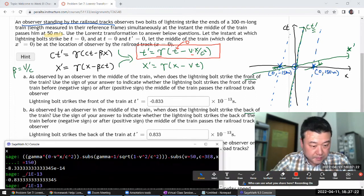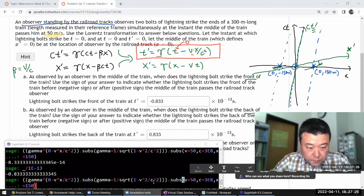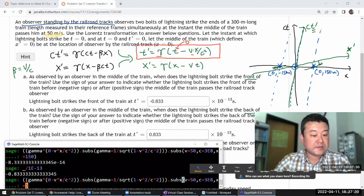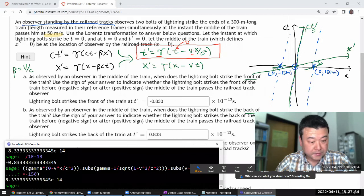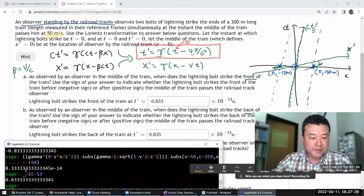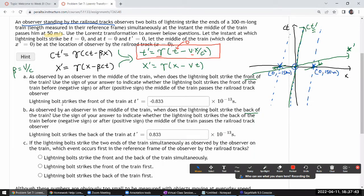When I plug in the numbers here, it's basically the same except for change of one number. Instead of x equals 150, x is now equal to minus 150. I think everything else for me is the same. And you know if I divide this by 10 to the minus 13. So yeah lightning strikes the front before the back.